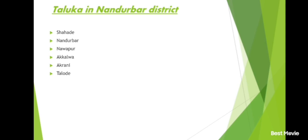Nanded district and its talukas: Nanded, Hadgaon, Kinwat, Bhokar, Biloli, Degloor, Mukhed, Kandhar, Loha.